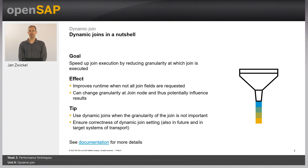Similarly, like optimized join columns, it can reduce the granularity at which a join node is processing data. Therefore, use the dynamic join option whenever the granularity at the join node is not relevant, and then you can get a good speed up.